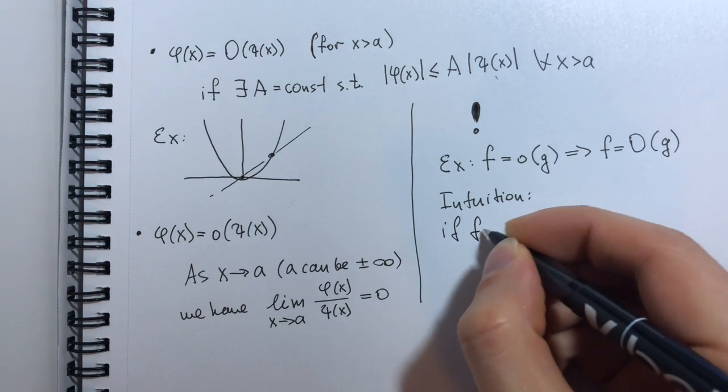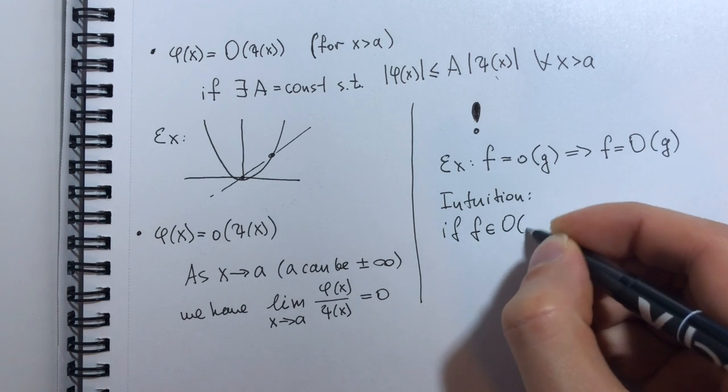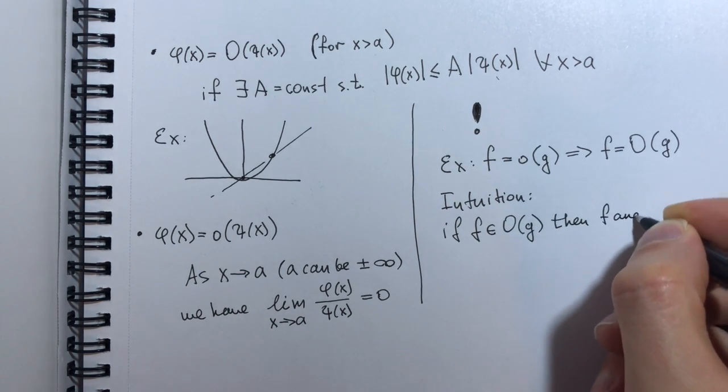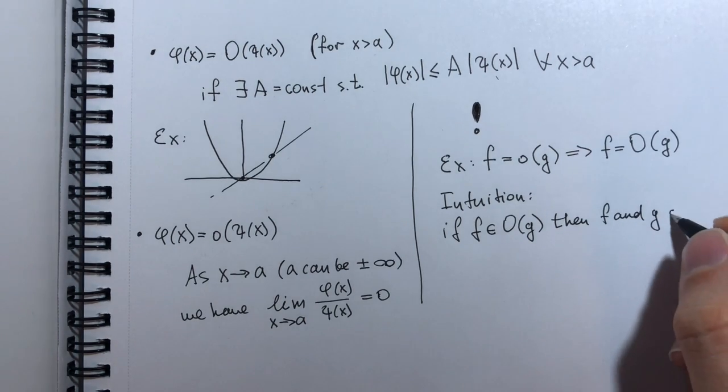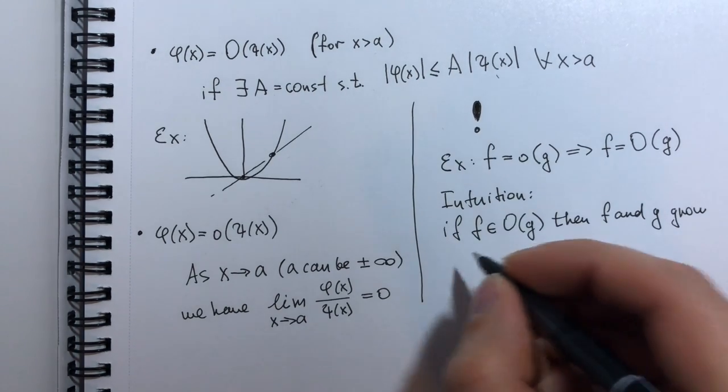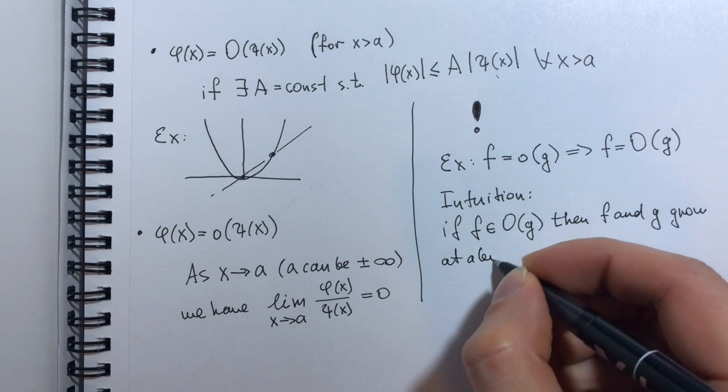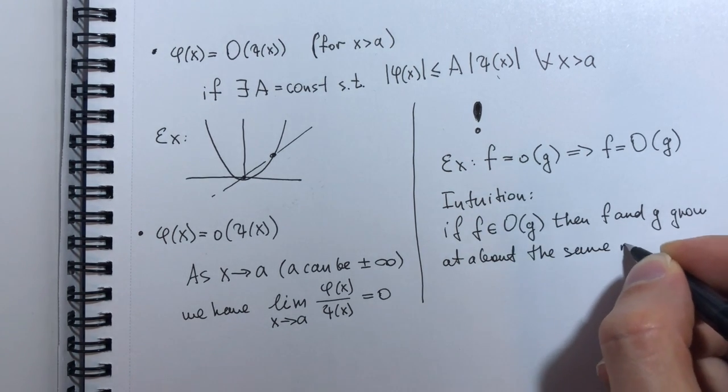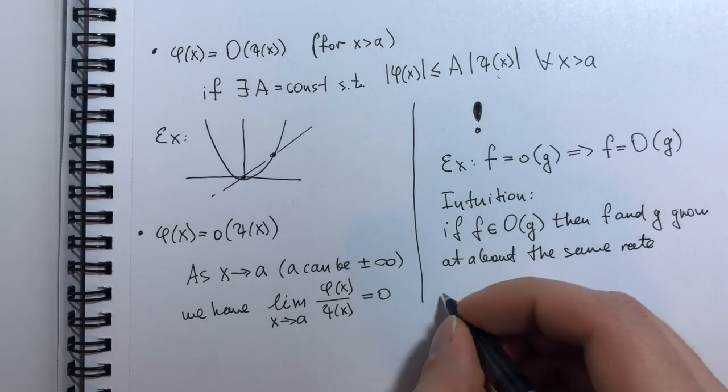So if F belongs to big O of G, then F and G grow at about the same rate.